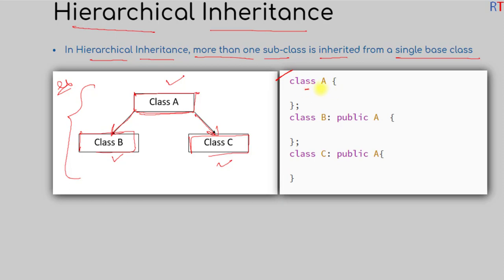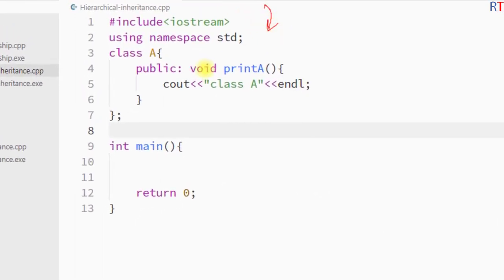The syntax is: first we create class A, then we create class B which inherits class A, and then we have class C which also inherits class A. So we have one parent class A and two child classes, class B and class C.